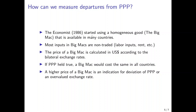One nice idea stems from The Economist magazine. In 1986 they started using one particularly homogeneous good available across many countries — the Big Mac — and compared its real price across different countries.